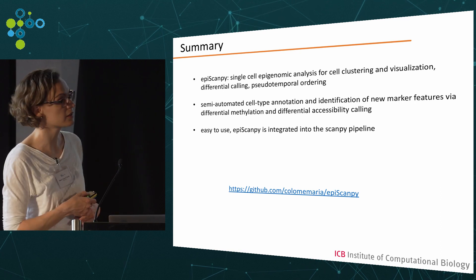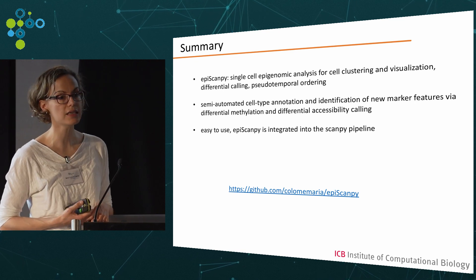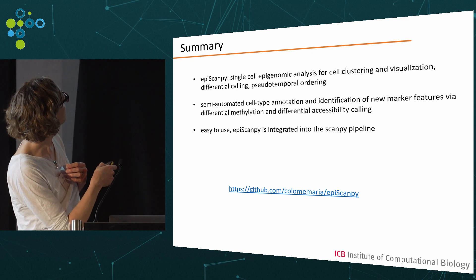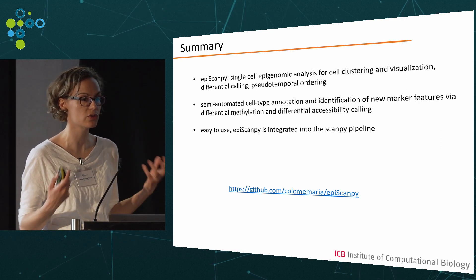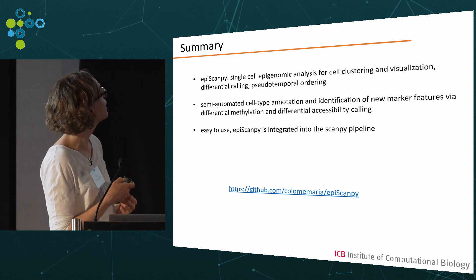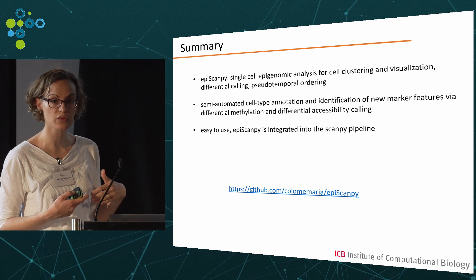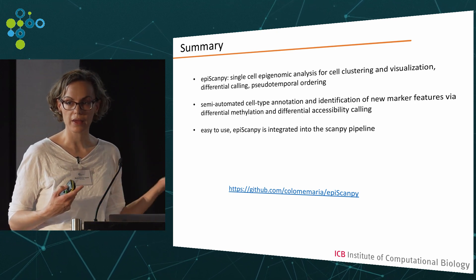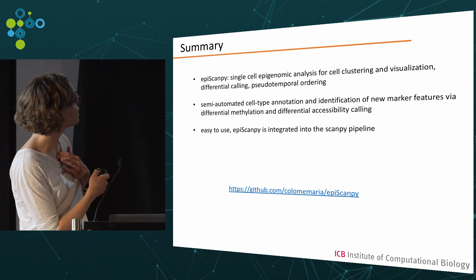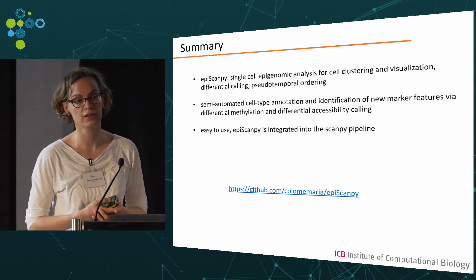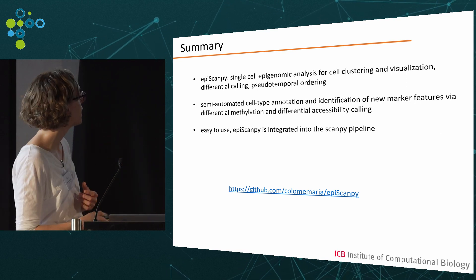So I've shown you the EpiScanPi platform, which currently supports single cell DNA methylation and single cell ATAC-seq analysis. It's built in a modular way to integrate many other potential single cell epigenomic measurements and to merge single cell transcriptomics with epigenomics. It allows for semi-automated cell type annotation based on ranking of differential features — which is more interpretable than using windows alone — and it's fully integrated in the SCAMPI pipeline, inheriting all its functions. It is available on GitHub.